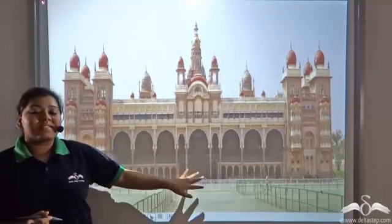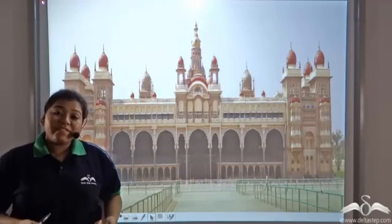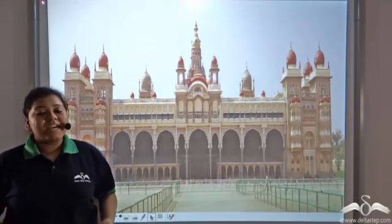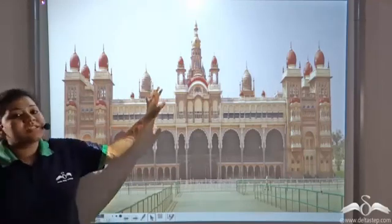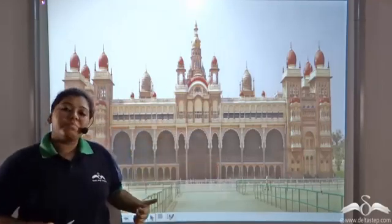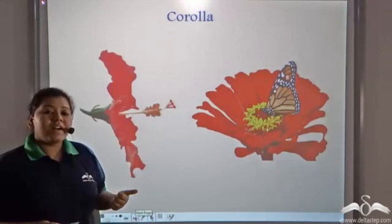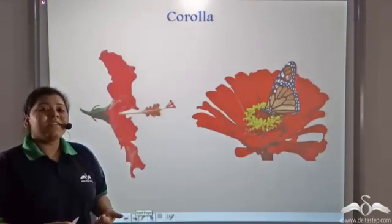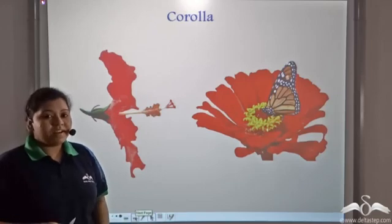Look at this huge palace. The grandeur of this palace is definitely a matter of pride for the king and the queen. But the main function of this palace is to protect them. Similarly, the corolla of a flower provides protection to the androecium and the gynoecium of the flower.